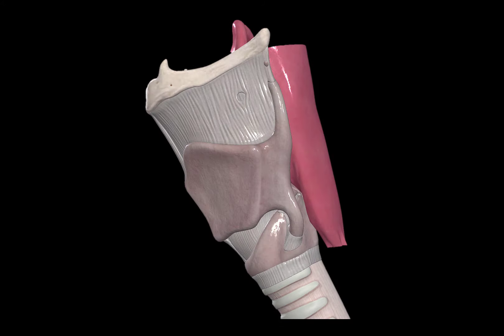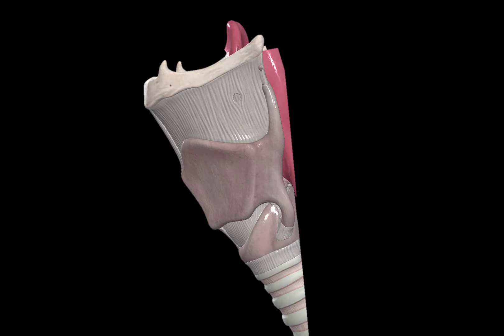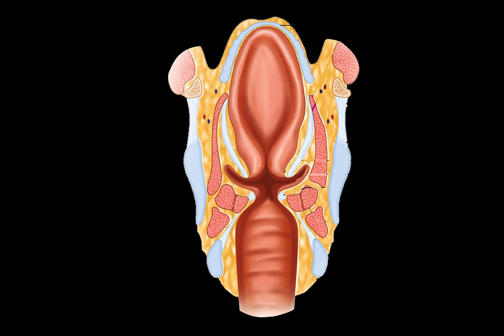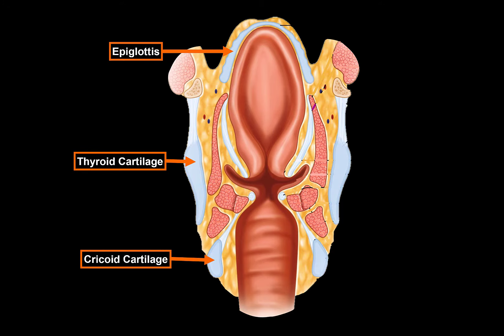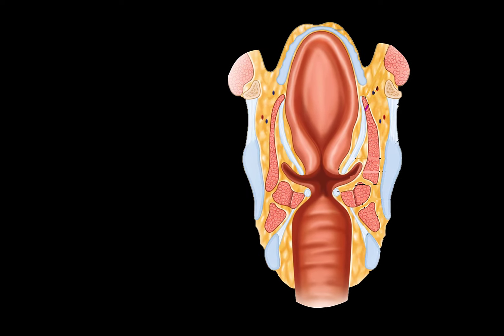Here you see a lateral view of the larynx. If you make a vertical cut of the larynx and look at it from this view, you will see this. Some important landmarks: the epiglottis, the thyroid cartilage, the cricoid cartilage, and the hyoid bone. Between the cartilages you'll find the thyrohyoid membrane. Let's now go ahead and cover the walls of the larynx.